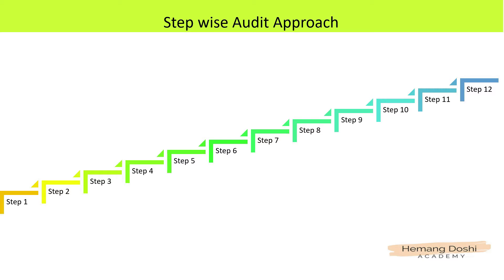Step 1 is about validating the availability of the information security policy. As an auditor, you need to check the availability of the information security policy, whether the policy is approved by appropriate authority, whether the policy is updated at periodic intervals, and other aspects with respect to the policy. We will discuss in detail how to audit and validate these controls in our Step 1 video.